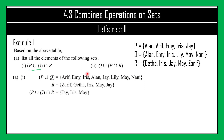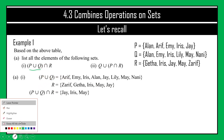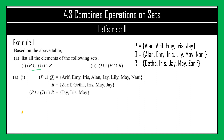Since the operation after the bracket is intersect, we take only the elements that appear in both (P union Q) and R. The common elements are Iris, May, and Jay. Wherever possible, always list names or elements in ascending order, from smallest to biggest. So the final answer for question A number 1 is {Iris, Jay, May}.